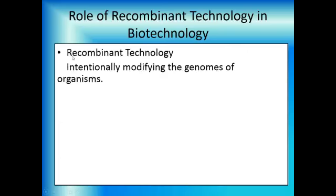Let's differentiate recombinant technology from biotechnology: recombinant technology is intentionally modifying the genomes of organisms. When I say that, you think of taking a gene, snipping it out of one organism, and moving it into a completely different organism. Well, that is recombinant technology, but we've been doing recombinant technology by breeding different organisms — domesticated animals, domesticated plants, you name it. You can either do it through natural methods, or through recently developed methods that make it much easier and get the result that we want.